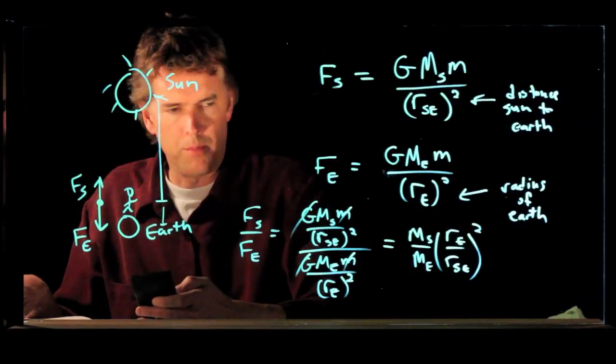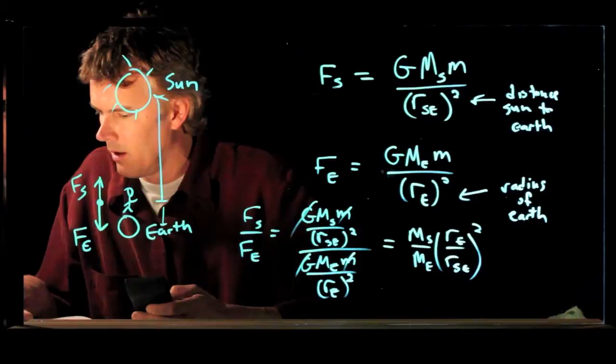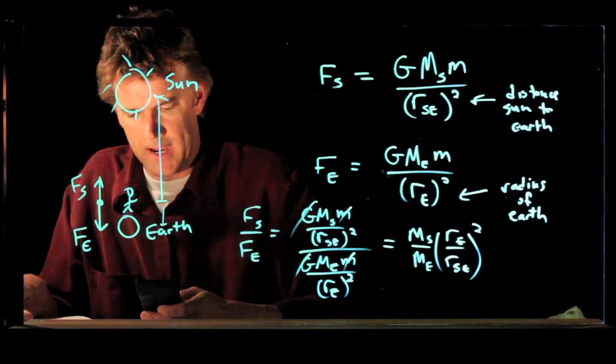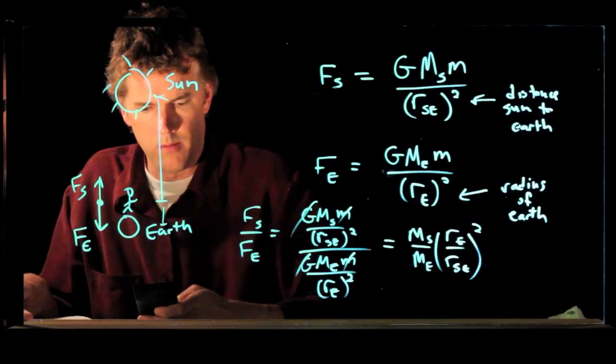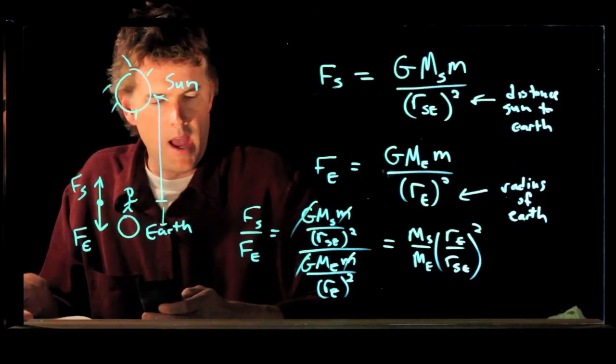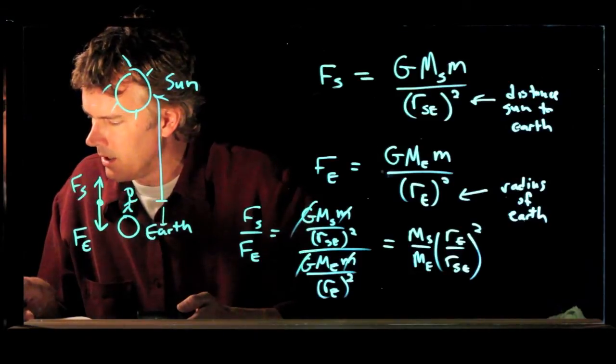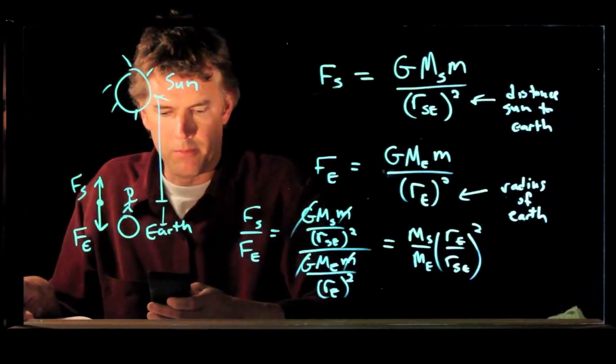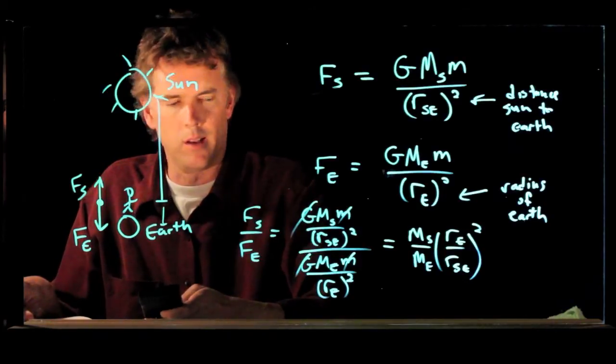And we multiply by the mass of the sun, which is 1.99 times 10 to the 30 kilograms. And we divide by the mass of the earth, which is 5.98 times 10 to the 24 kilograms.